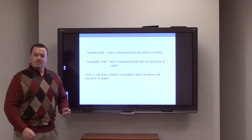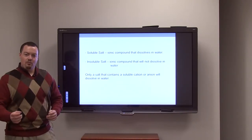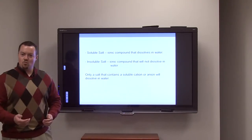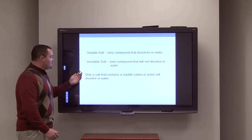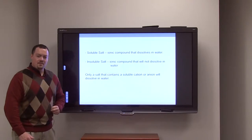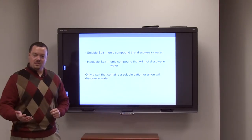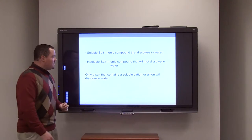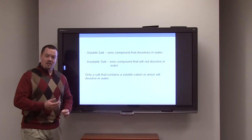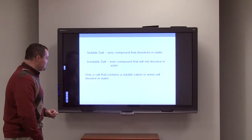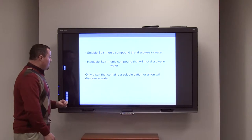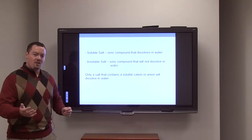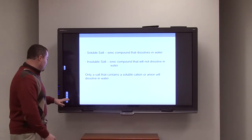A soluble salt is simply an ionic compound that will dissolve in a solvent such as water. An insoluble salt is the complete opposite — this is an ionic compound where you've got your positive and your negative ions, but this compound will not dissolve in water. Only a salt that contains a soluble cation or a soluble anion will dissolve in water.